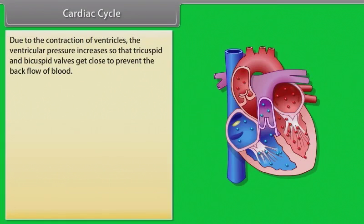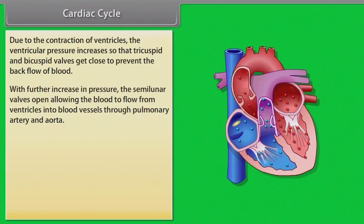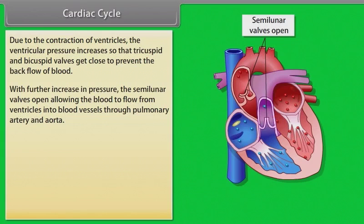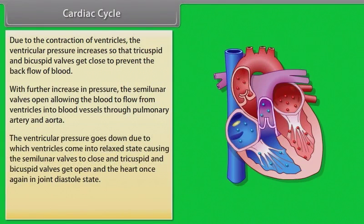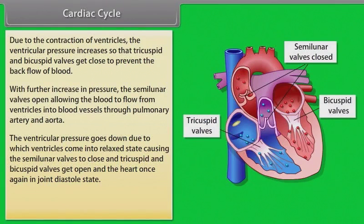The ventricular muscles contract and the atria relax. Due to ventricular contraction, pressure increases, causing the tricuspid and bicuspid valves to close to prevent backflow of blood. With further increase in pressure, the semilunar valves open, allowing blood to flow into the pulmonary artery and aorta. As ventricular pressure decreases, the ventricles relax, semilunar valves close, tricuspid and bicuspid valves open, and the heart returns to joint diastole.